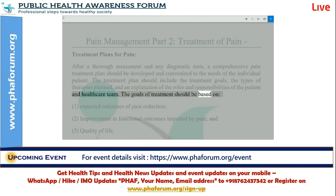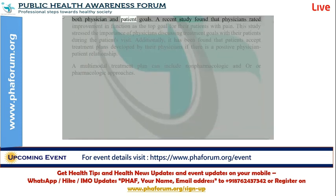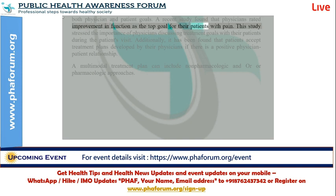The goals of treatment should be based on: one, expected outcomes of pain reduction; two, improvement in functional outcomes impaired by pain; and three, quality of life. When creating treatment plans for patients with pain, it is important to focus on both physician and patient goals.